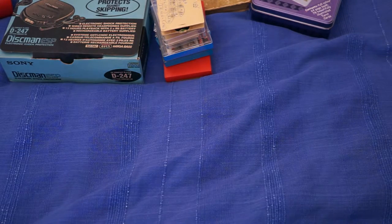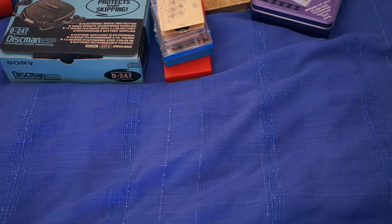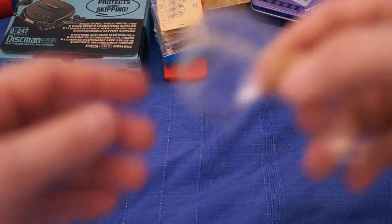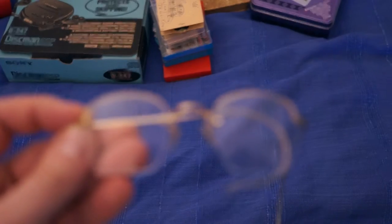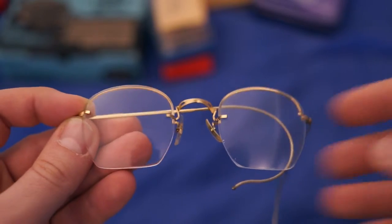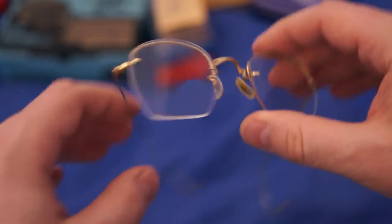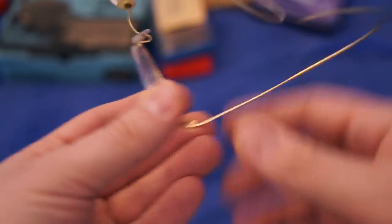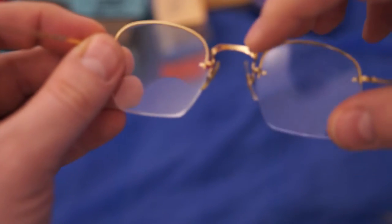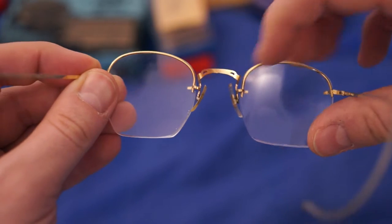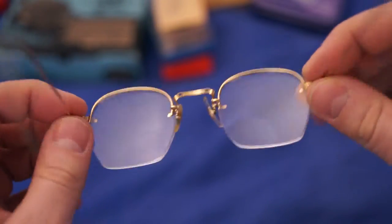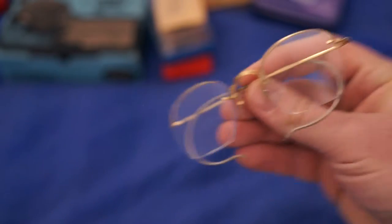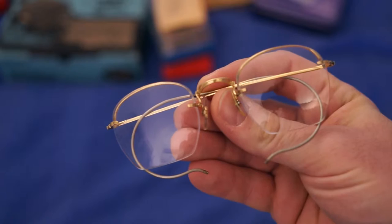Here's a pair of Bosch and Lomb spectacles or glasses. I like the frames. The glass is a bit weird but the frames are pretty cool. It says B and L, that should be Bosch and Lomb which is a good company. They made the early Ray-Bans. I paid two bucks for these. It's a gamble and we'll see.